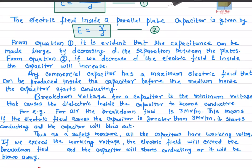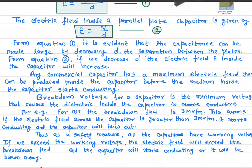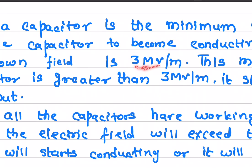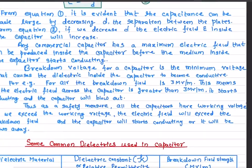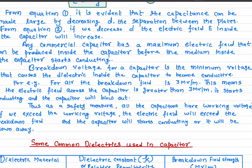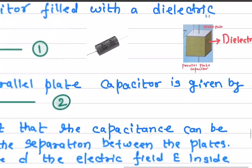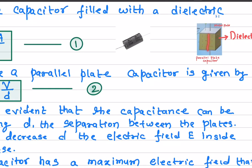Let me give you an example for air. If a capacitor has air as a medium, the breakdown field for air is 3 megavolts per meter. So if the electric field across the capacitor is greater than 3 megavolts per meter, the air will start conducting.